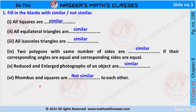Sixth, a rhombus and a square are not similar to each other. Because in a rhombus four sides are equal but their four angles are not equal. But in a square, four sides are equal and each angle is equal to 90 degrees. So we can say that a rhombus and a square are not similar to each other.